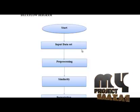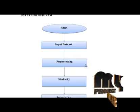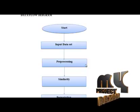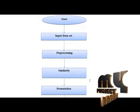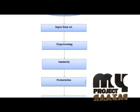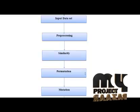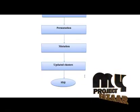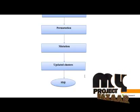First we select the input data set and perform preprocessing. In preprocessing we remove the stop words and stemming words. Then we calculate the term frequency and inverse document frequency for calculating the similarity. After that we perform permutation, then mutation, then update the clusters, and finally obtain the best fit clusters.